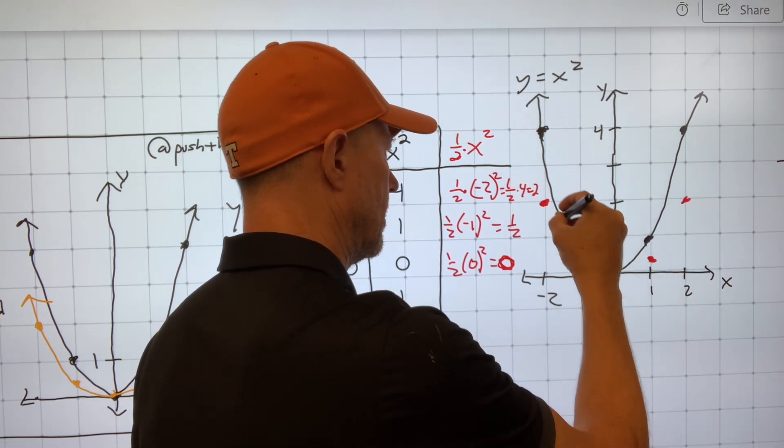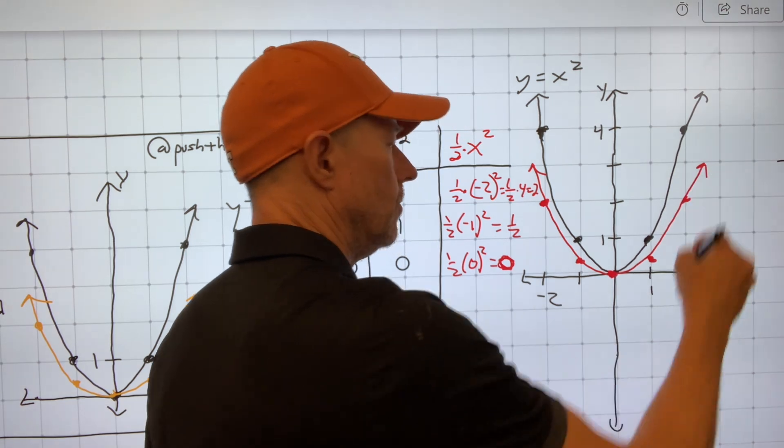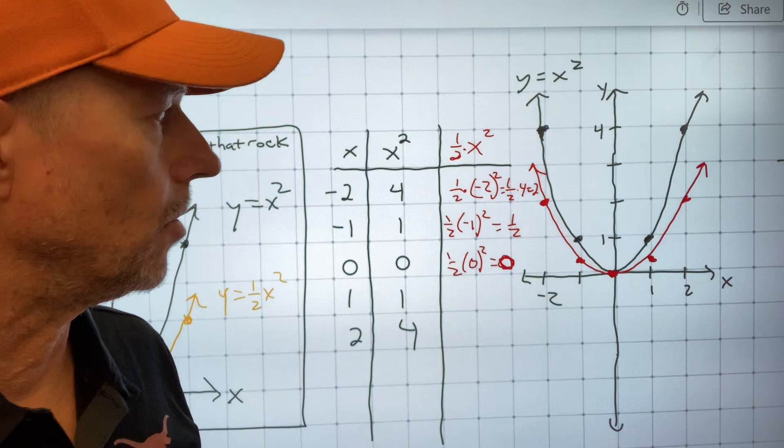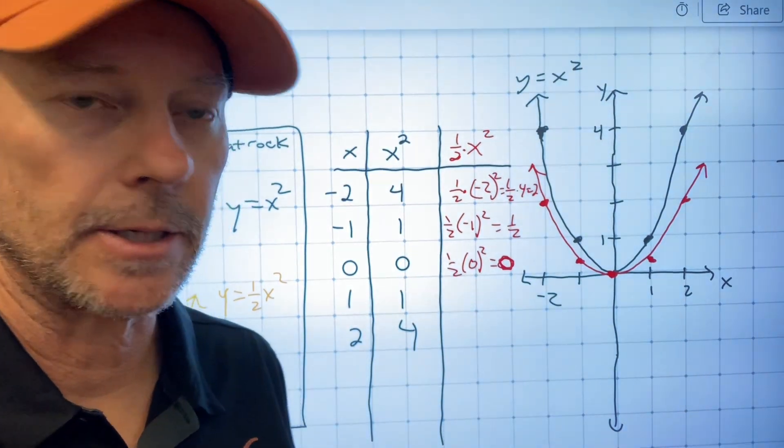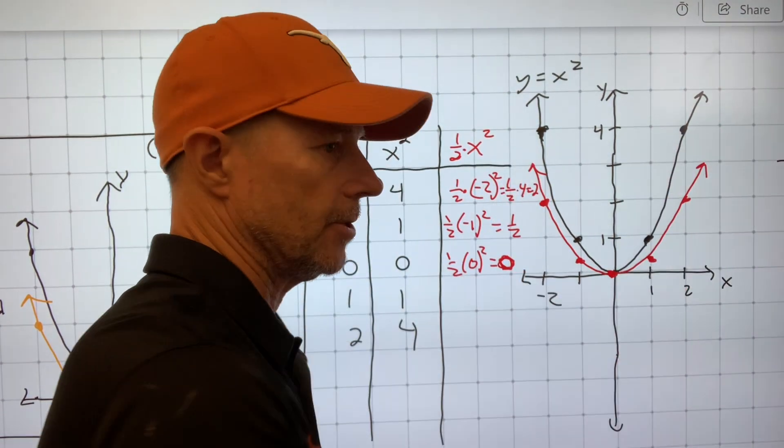And so I have this parabola that is what some people call compressed. Or some people use the word shrink. It's shrinked a little bit, but it's fatter, and it's closer. The points are closer to the x-axis.